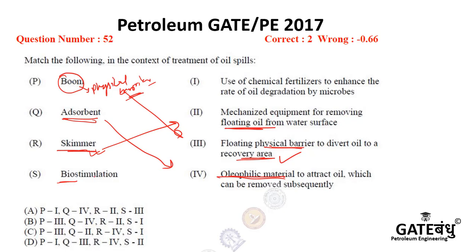Biostimulation — whenever microbes are present, you can correlate this with biological methods. Biostimulation involves the use of chemical fertilizers, and it increases the rate of oil degradation by about 14.5%. It is a biological method for treatment of soil contaminated by oil spilling.